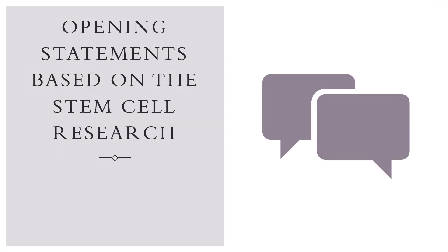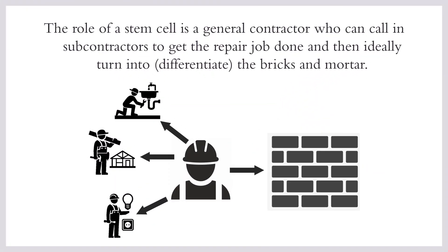We're going to start with some opening statements — some truisms, if that's possible — based on the existing stem cell research. And then after that, we'll get into the specific types of products that are out there. The role of a stem cell is a general contractor who can call in subcontractors to get the repair job done and then ideally turn into the bricks and mortar. That's called differentiation.